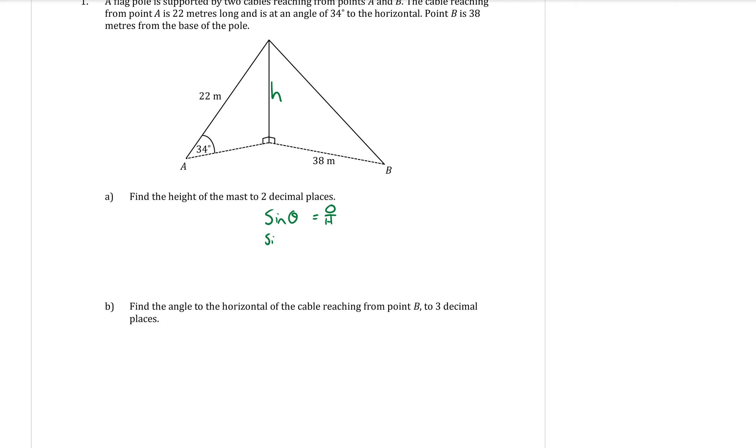So sine theta equals opposite over hypotenuse. Substituting into that I have got sine 34 equals the opposite is H and the hypotenuse is 22. Because the H is on the top I need to times the 22 across. H is equal to 22 times by sine 34. And when you type that into your calculator you will get 12.30 metres when that's rounded to two decimal places.